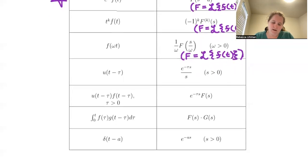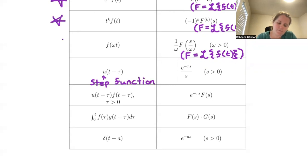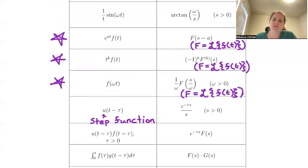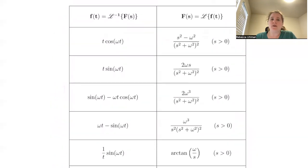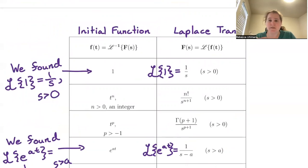The last few rows of the table: u of t minus tau refers to a step function — we will see those once we get to section 8.4. The integral of f of tau times g of t minus tau, d tau evaluated from 0 to t, is called a convolution — we will see that later as well. For now, we'll be working with the standard function entries and the transformation rules above. We will use this table to find our Laplace transforms instead of having to use the improper integral definition.